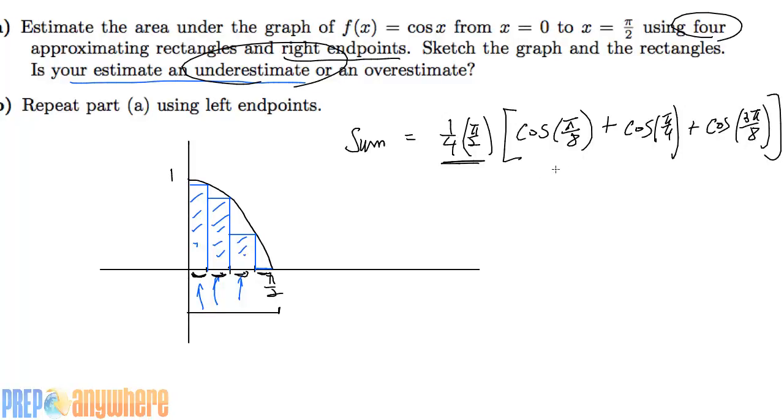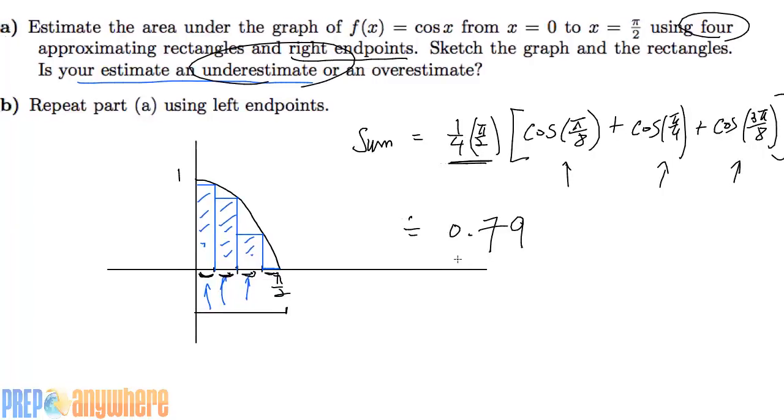So this is the factor form. These are all heights, this is the base. If I expand, you get height times base, height times base, and height times base. So this will give you the area of the three rectangles. Let me punch that in the calculator: we have approximately 0.79.